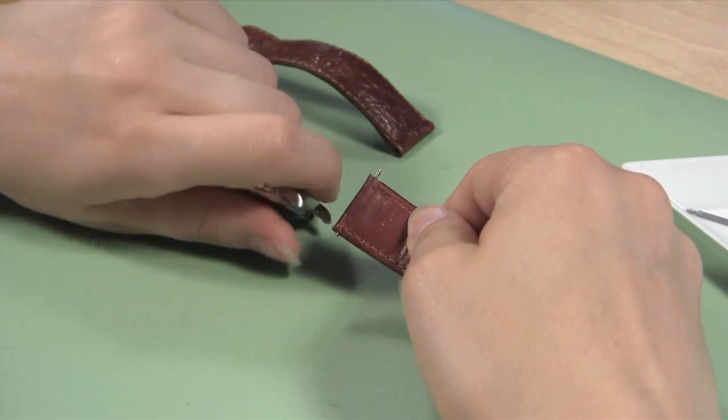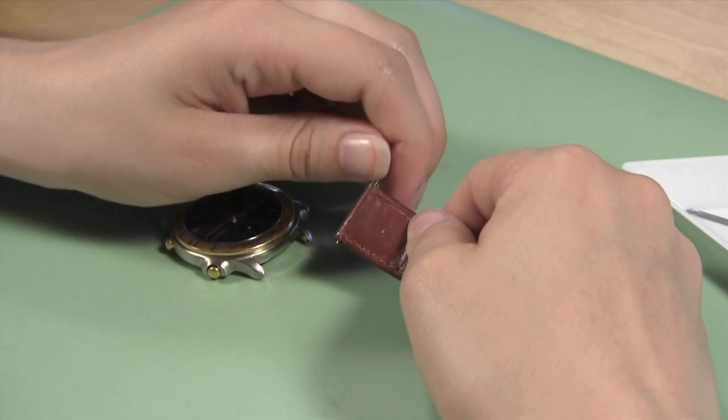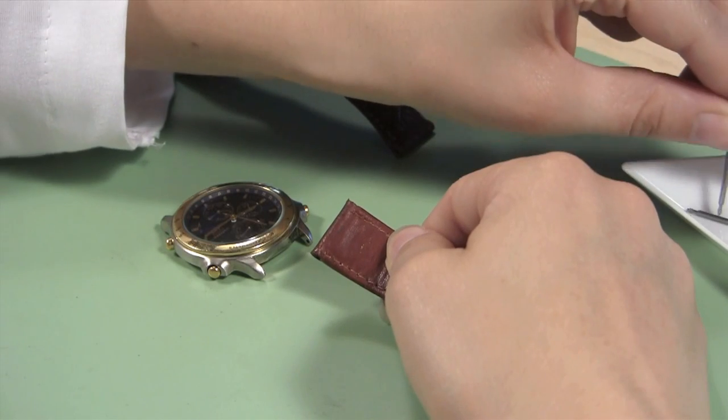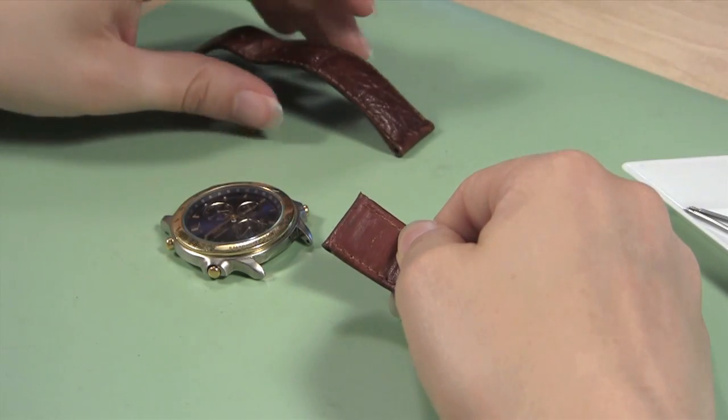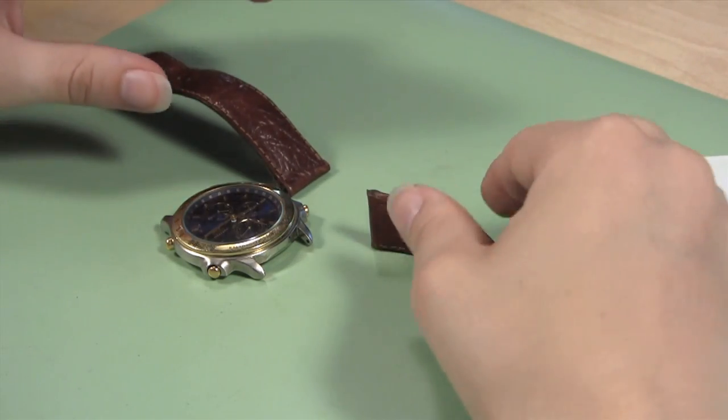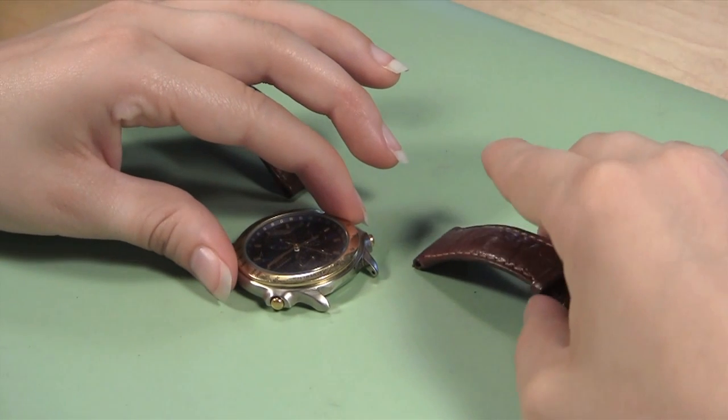Remove the second half of the watch band from the watch case and take the spring bar out of the band. Set the spring bar in your parts tray. Then lay the second half of the watch band aside and on the other side of the watch case like you did with the first one.